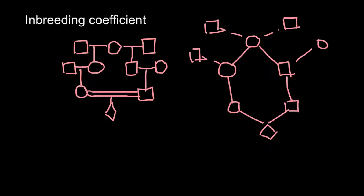Now let's analyze what we see. It is not immediately clear who can pass the same kind of alleles to this individual. For example, this individual might seem able to pass two same alleles, but actually that individual is not part of the loop. Only this female is part of the loop, so she can be considered the common ancestor for both parents of this individual. The loop is now clearly visible.